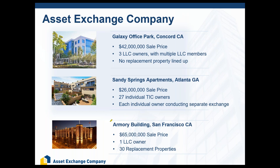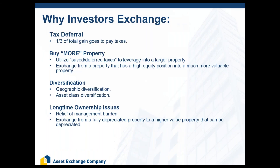Last building — this is a very famous building in San Francisco on the corner of Mission Street, the Armory building. We worked with a seller of this property last year. He sold it for $65 million and bought about 30 replacement properties. If you Google that property, it's got a very interesting past — don't Google it at work because it's a not-so-safe-for-work type of building. Just a couple of deals we've worked on. Now I want to pass the mic back to Matt to talk through some of the reasons why our clients are doing 1031 exchanges.